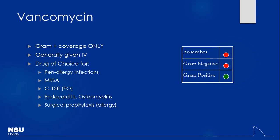The other big use is for C. diff. Clostridium difficile is an anaerobe, and while vancomycin generally has no anaerobic coverage, this is one exception. For C. difficile colitis, you can use oral vancomycin — not IV; it has to be oral. Because vancomycin is big and bulky, it doesn't get absorbed through the GI tract, so there's no risk for systemic side effects. The other drug that covers C. diff is metronidazole (Flagyl). Because of increasing resistance to metronidazole due to antibiotic over-prescription, vancomycin is now the first-line drug for C. diff in adults.